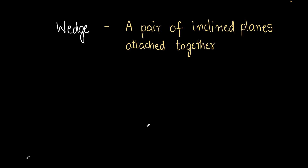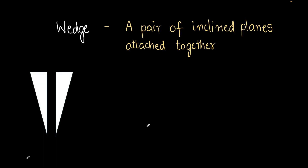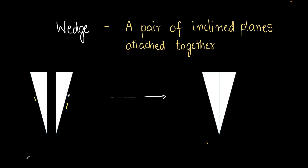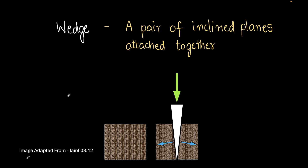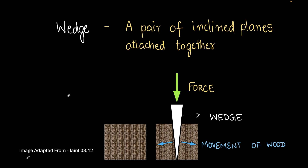Let's move on to the next topic: wedges. Wedges are basically a pair of inclined planes joined together. If we have two inclined planes — two ramps — and join them, we get a wedge. Wedges are very useful in daily life. For example, if you have a piece of wood and want to break it into two pieces, the simplest way is to strike it with a wedge. Here is our wedge, here is the force applied on it, and the wood splits in the direction it's pushed — it gets split into two pieces.